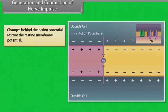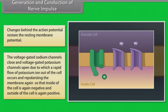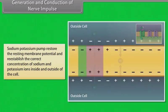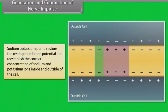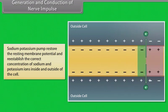Changes behind the action potential restore the resting membrane potential. The voltage-gated sodium channels close and voltage-gated potassium channels open, causing a rapid flow of potassium ions out of the cell and repolarizing the membrane, so that the inside of the cell is again negative and the outside is again positive. The sodium-potassium pump then restores the correct concentration of sodium and potassium ions inside and outside of the cell.